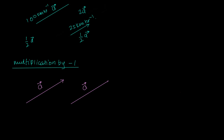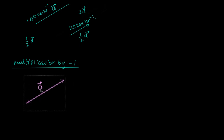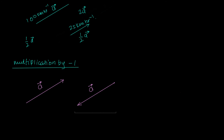The direction changes — the direction becomes the opposite. We call these vectors anti-parallel. 'Parallel' is for lines; 'anti-parallel' is for vectors when the direction is opposite. The length is the same, the direction is just opposite. So this vector is now minus one times a, which we write as minus a.